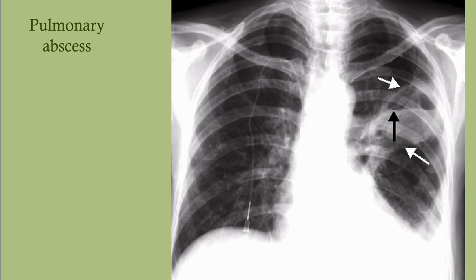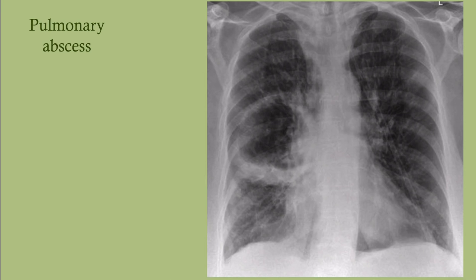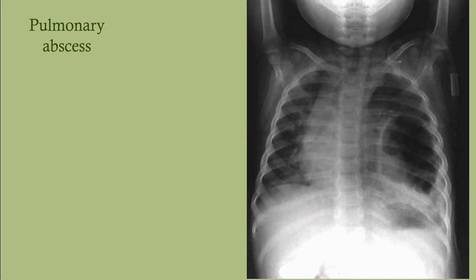Here are examples of pulmonary abscess on chest x-ray. You can see the cavitating lesion, with the arrow pointing to the air-fluid level. Here's another example of a cavitating lesion, and this one is in a child — you can tell by the shape of the ribs.